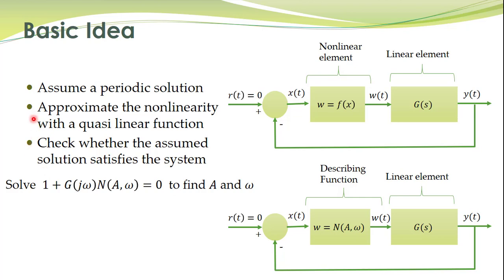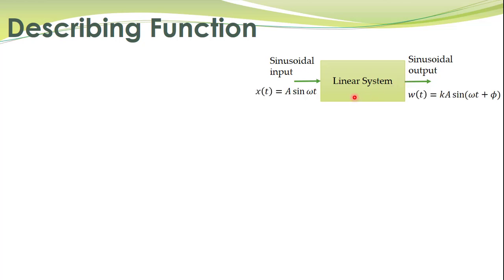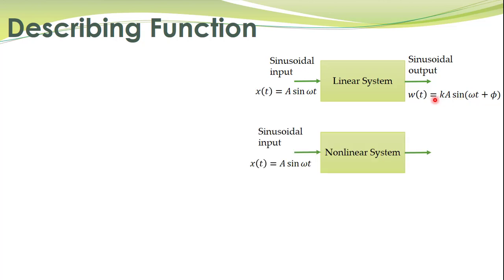Let's start with the describing function. For linear systems we have the transfer function. A linear system has the property that if you apply a sinusoidal input the output is also sinusoidal. That is, if you have input x(t) = A sin(ωt), then the output of a linear system will only add some scaling to the amplitude and some phase shift; otherwise the output is also sinusoidal.